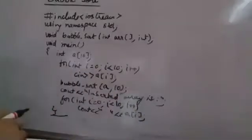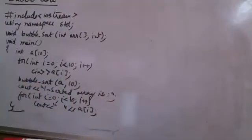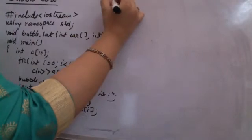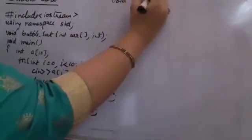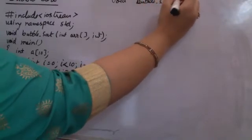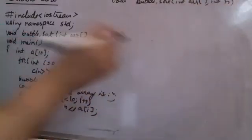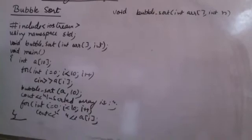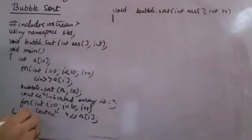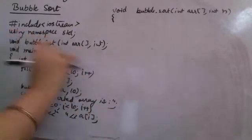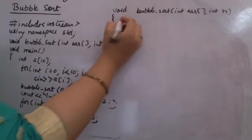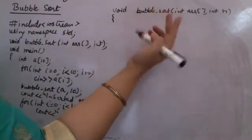Within the bubble sort procedure I declare void bubble_sort receiving the array and the size as integer n. Inside the function I have to run two loops: one outer loop for the entire array and one inner loop for the repeated comparisons.